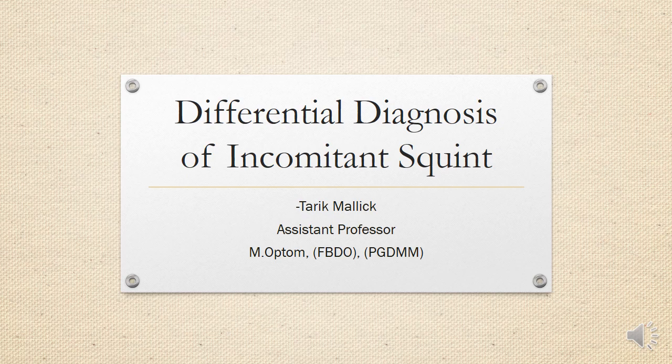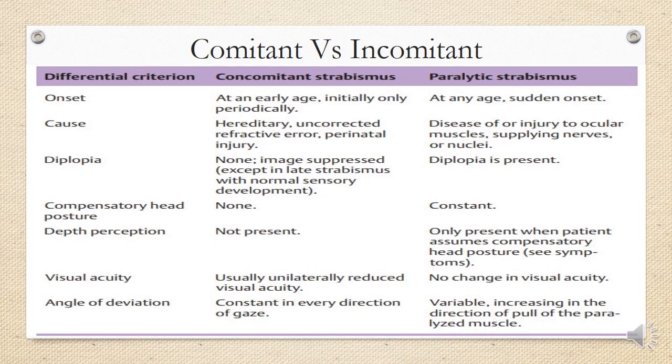Hello everyone. Today we are going to discuss how to differentially diagnose in concomitant squint — whether it is congenital, acquired, restrictive, or non-restrictive type of incomitant squint. This can be done by examining some clinical characteristics, as they differ from one another. Let's move on and see what these different clinical characteristics are — concomitant versus incomitant.